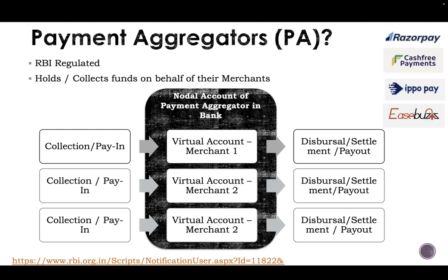The nodal account provider has no visibility on the purpose of each merchant's transaction — it can only see lakhs of money coming in and going out. The visibility of what the merchant is doing lies only with the merchant, not with the bank, though there are some yearly audits for merchant onboarding. Since thousands of merchants are onboarded, large amounts move through the nodal account and the bank doesn't have clear visibility on what's happening inside.